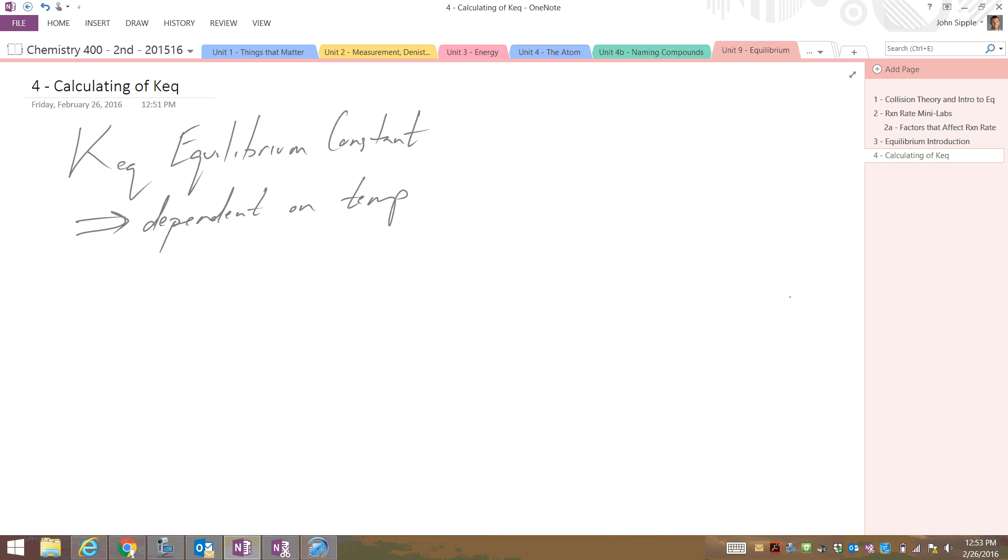All right, so the equilibrium constant is dependent on temperature. It changes whether the temperature is higher or lower. Remember that it indicates where the equilibrium lies. It's associated with whether the equilibrium is in favor of the products or the reactants. If K is greater than 1, products are favored at equilibrium. If K is less than 1, reactants are favored.